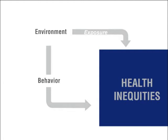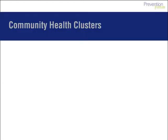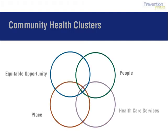This model suggests that inequities in health and safety are shaped by the community environment. We'll show you a slide of 18 community factors that make up the community environment. These factors are organized into four clusters. The overlapping circles indicate that each of the clusters interact and influence one another. The four clusters are equitable opportunity, people, place, and health care services.